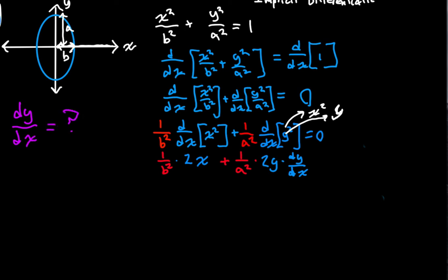So now let's bring this all together. We're going to have 2X over B squared plus 2Y over A squared times DY DX is equal to 0.